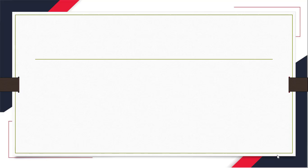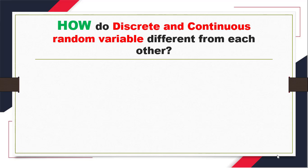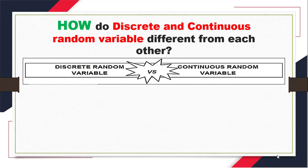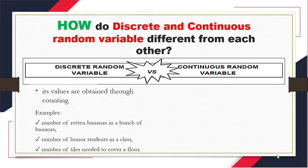Now, if you remember, a random variable can either be discrete or continuous. So the question is, how do discrete and continuous random variables differ from each other? To answer that, let us investigate. In discrete random variable, its values are obtained through counting. Examples could be number of rotten bananas in a bunch of bananas, number of honor students in a class, number of tiles needed to cover a floor, and a few other examples listed on our previous slides.